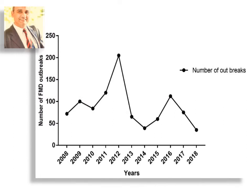This chart shows the number of foot-and-mouth disease outbreaks in India from 2008 to 2018, where at 2012 the highest number of outbreaks occurred in that country.